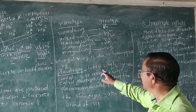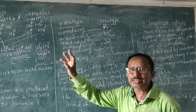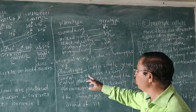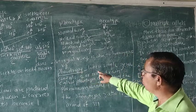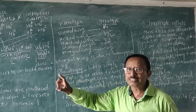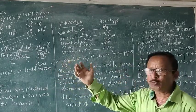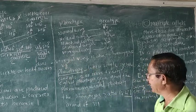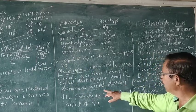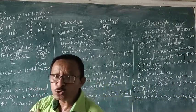When the single gene controls two or more traits, it is called the pleiotropic gene. The phenomenon is called pleiotropy. When the single gene controls two or more traits or characters, the phenomenon is called pleiotropy, and the pleiotropic ratio is 2:1.